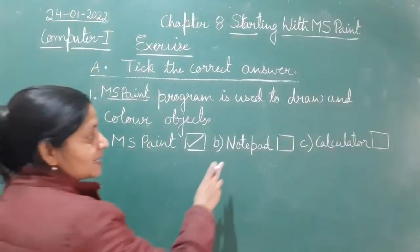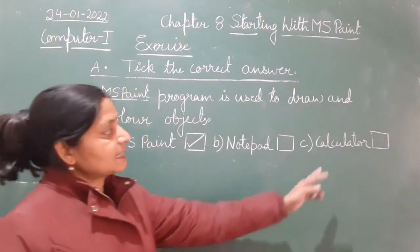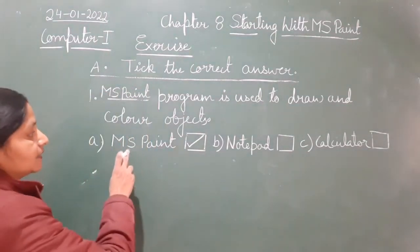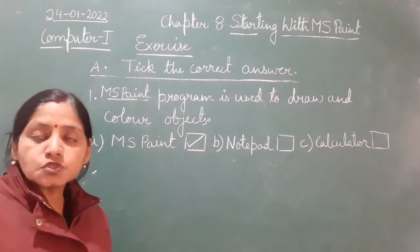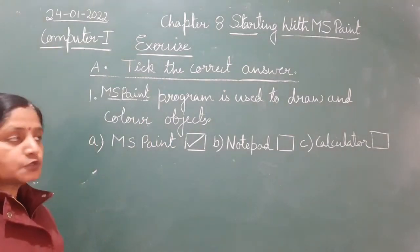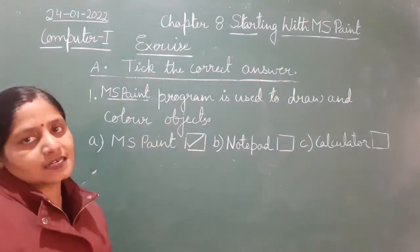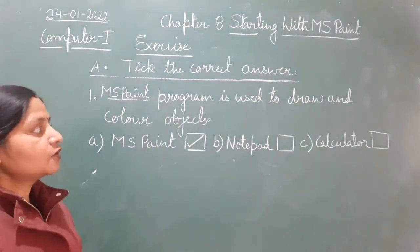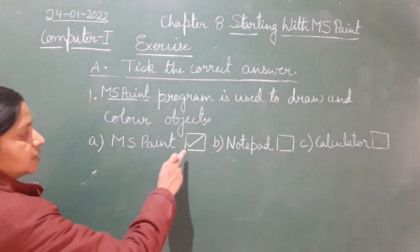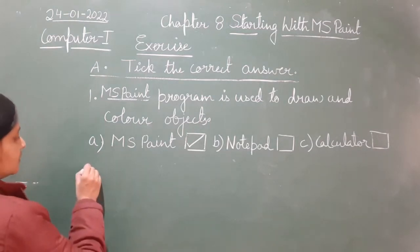Notepad is a program used to type text — that is a wrong answer here. Calculator is used to do calculations — also wrong. MS Paint is used to draw and color any object, so here you will put a tick in front of MS Paint. Now, second question.